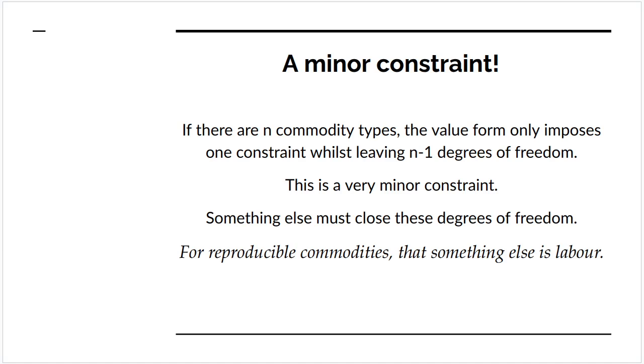If there are n commodity types, the value form only imposes one degree of constraint while leaving n-1 degrees of freedom. An infinity raised to the power of n-1. So it's a very minor constraint. Something else must close these degrees of freedom. And for reproducible commodities, that something else is labour.